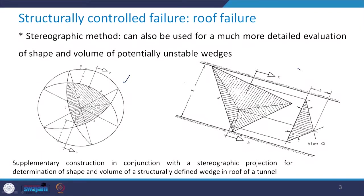Now, how can we find out the shape and volume of this potentially unstable wedge? We use two figures: one where all details of the discontinuity planes and the wedge are plotted on the stereographic net, and from that we derive the plan dimensions and height of the wedge formed in the roof. This gives us the supplementary construction in conjunction with stereographic projection for the determination of shape and volume of the structurally defined wedge in the roof of a tunnel.